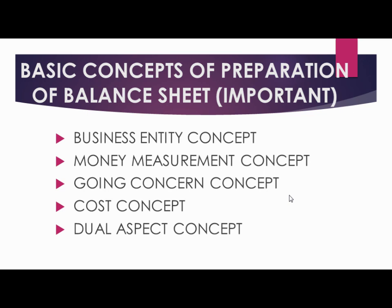Other dual aspect variations include: an increase in one asset with a simultaneous increase in liability — for example, taking something on lease or rent increases both asset and liability. There can also be a decrease in liability increasing another liability, and so on. All these forms are part of the dual aspect concept. The core formula is: Assets = Liabilities + Equity.